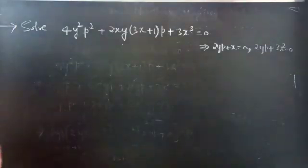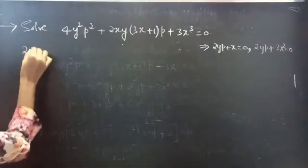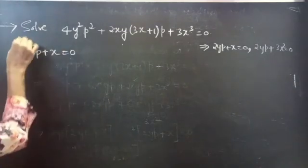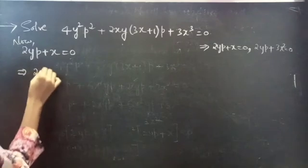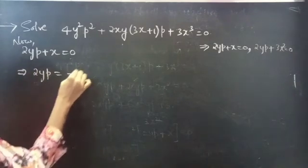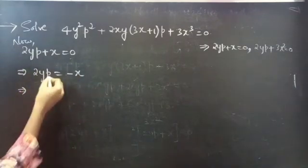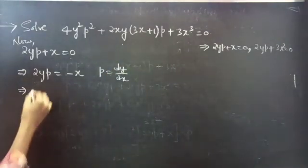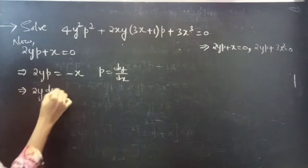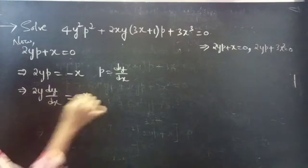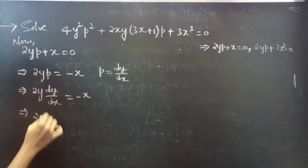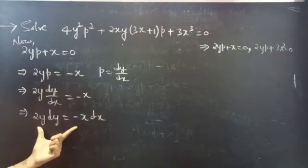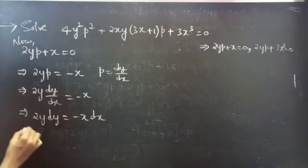Let's find the solution for the first one: 2yp + x = 0. Put p = dy/dx. Then, 2y·dy/dx = −x. We can write this as 2y·dy = −x·dx. Here the variables are separable, so we can integrate on both sides.